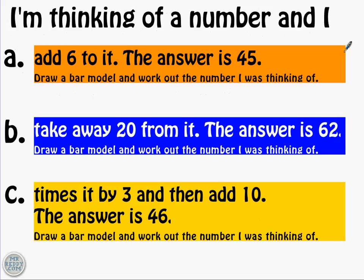So to leave you with, I thought I'd give you three questions. And for each of them, you need to draw a bar model and work out the number that I was thinking of. I want to see these neatly drawn in your notebooks with a pencil and a ruler. First one, I'll go over them, and then I'll pause the video, and you can rewind and play as much as you need. I'm thinking of a number, and I add 6 to it. The answer is 45. Second one, I'm thinking of a number, and I take away 20 from it. The answer is 62. And then for the last one, I'm thinking of a number, and I times it by 3, and then add 10. The answer is 46. All of those, please draw a bar model, work out the number that I was thinking of.